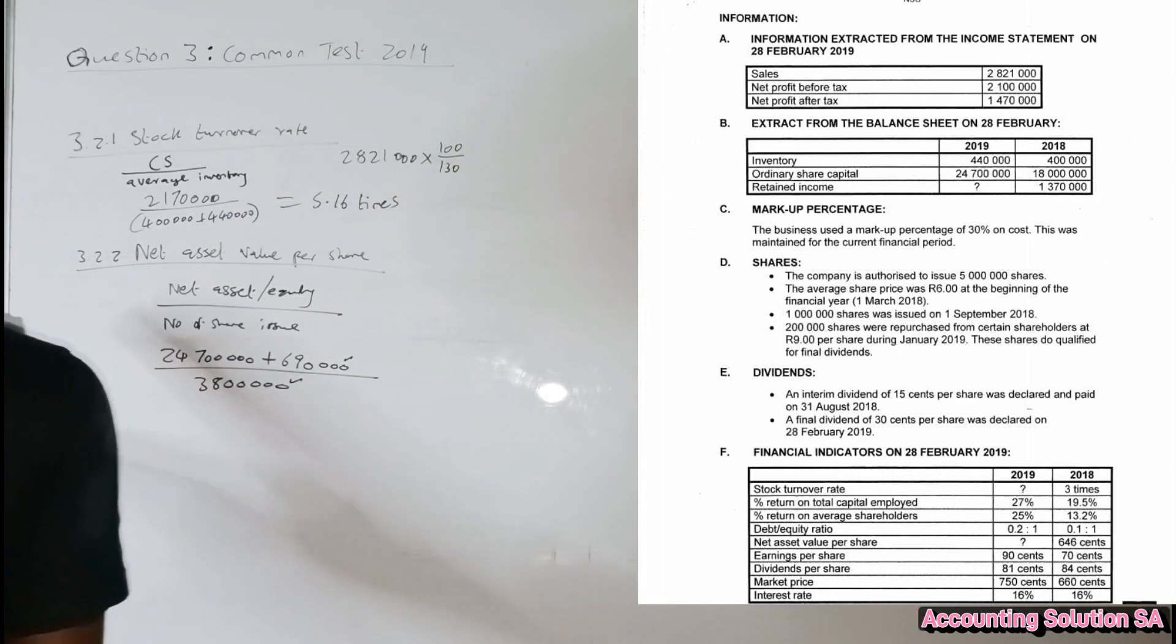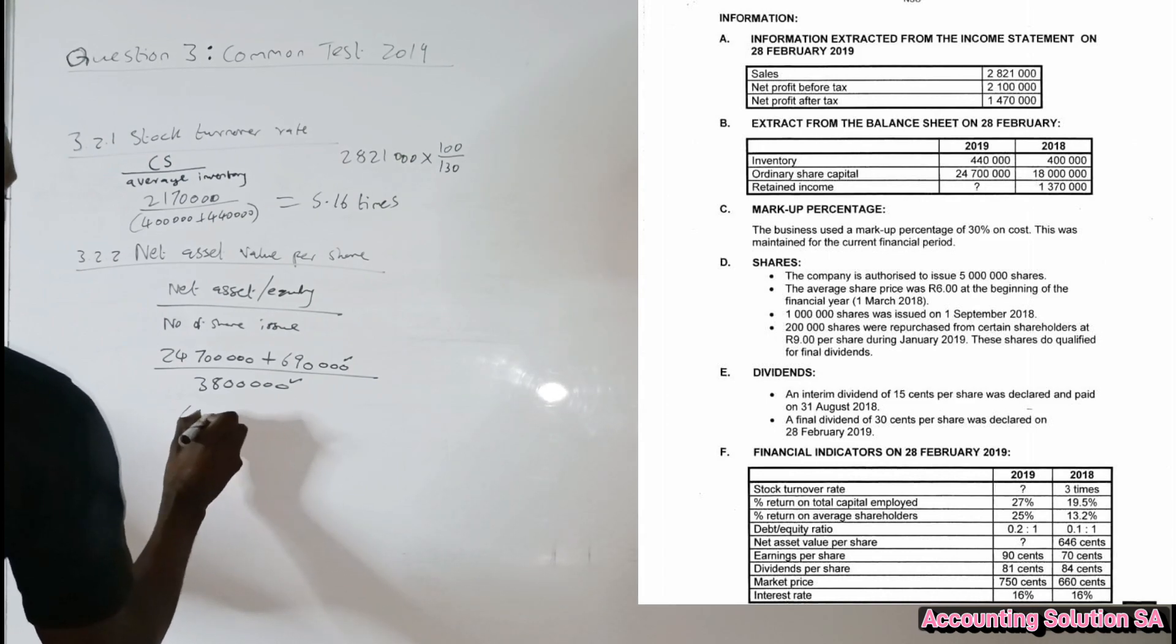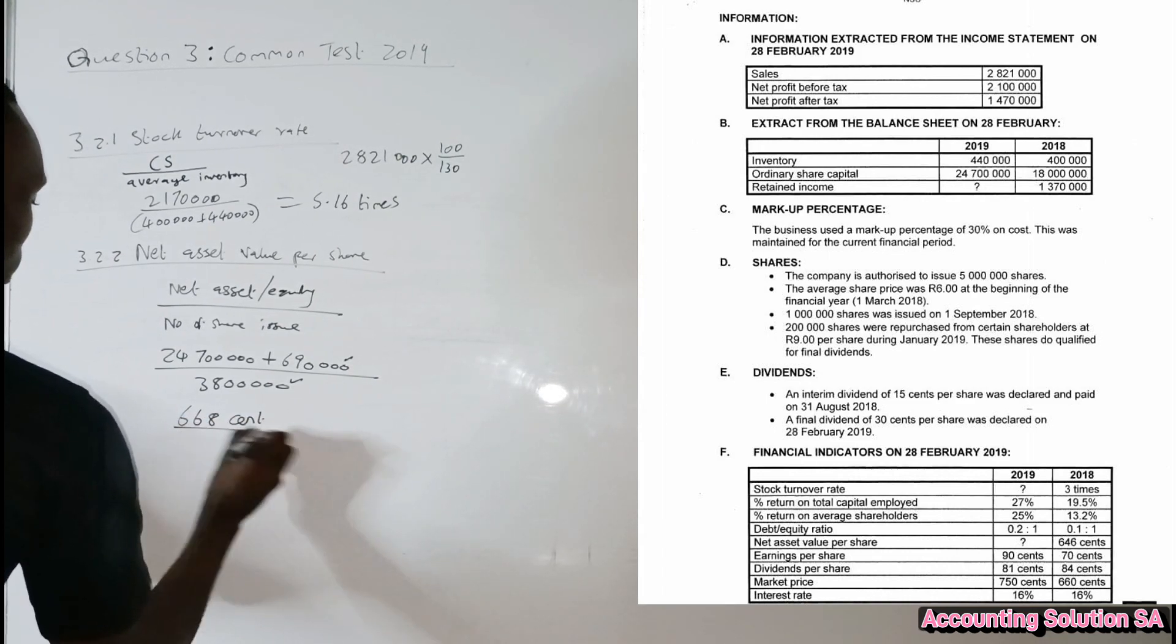Then after that you're gonna get 668 cents. So this is our net asset value.